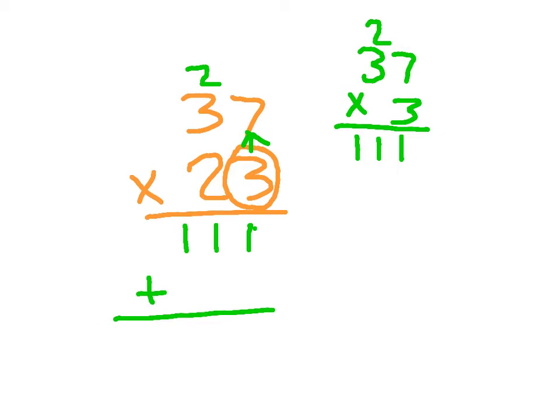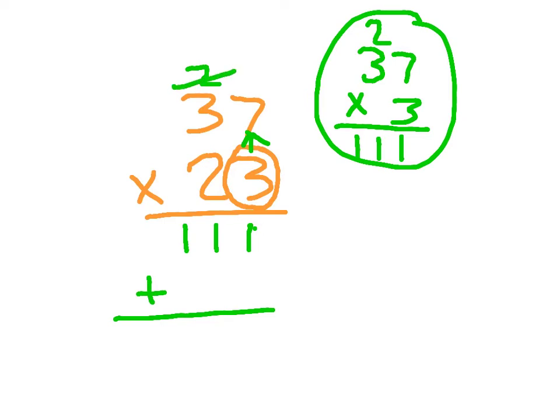The product of 37 times 23 cannot be 111, because we already know that the product of 37 times 3 is 111. There are still more steps. We cross out the regroup because we used that already, and then we work with the other digit. We haven't figured out the product of 37 times 20 yet.